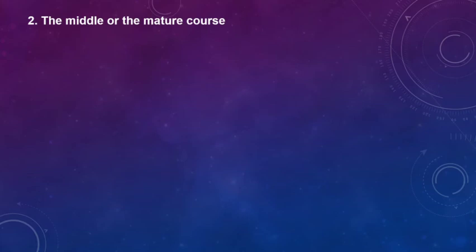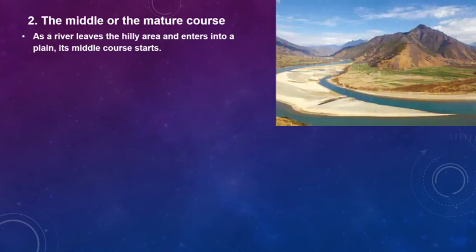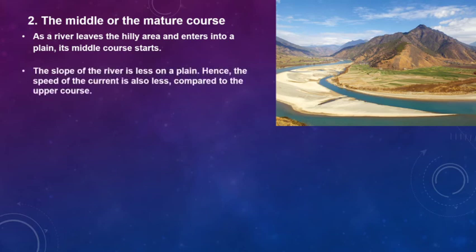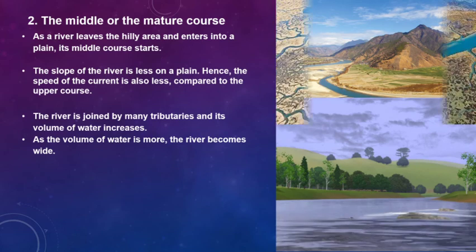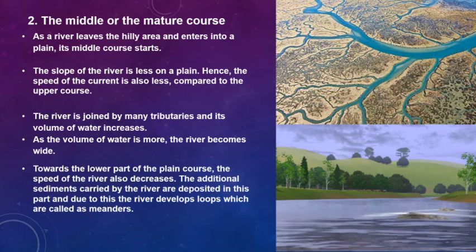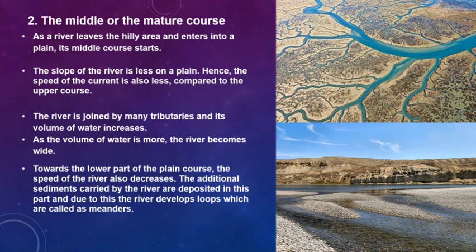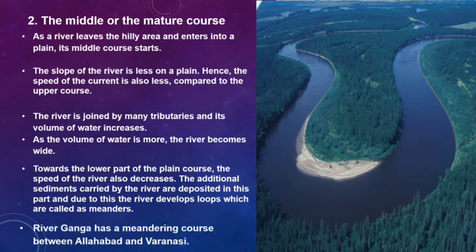The next stage is the middle or mature course. As a river leaves the hilly area and enters into a plain, its middle course starts. The slope of the river is less on a plain, so the speed of the current is also less compared to the upper course. The river is joined by many tributaries and its volume of water increases, making it wide. Towards the lower part of the plain course, the speed decreases further and additional sediments are deposited. Due to this, the river develops loops which are called meanders. The River Ganga has a meandering course between Allahabad and Varanasi.